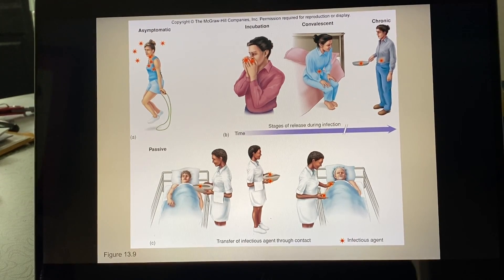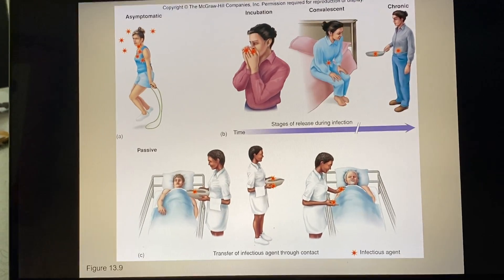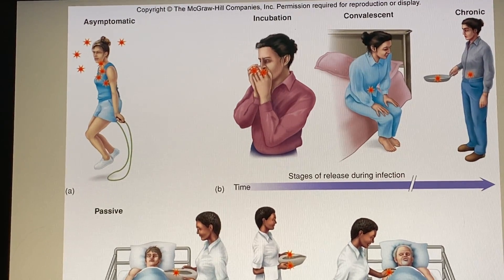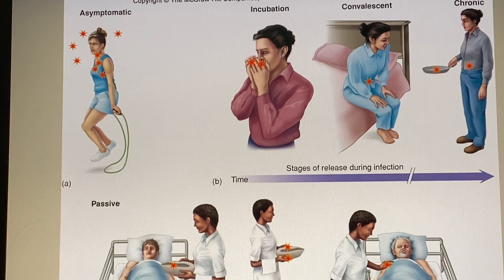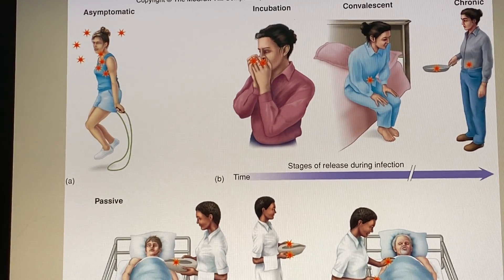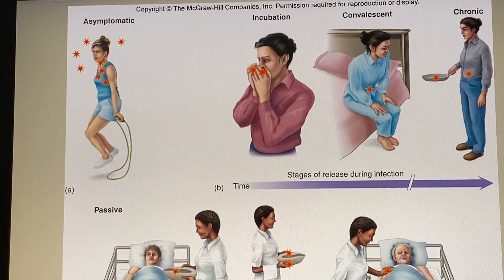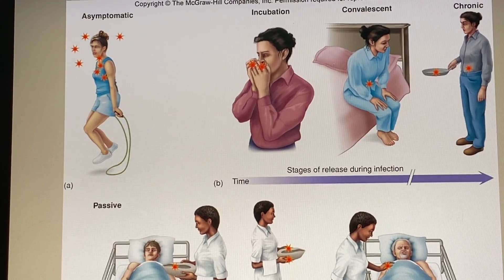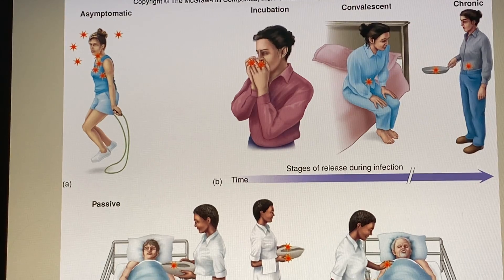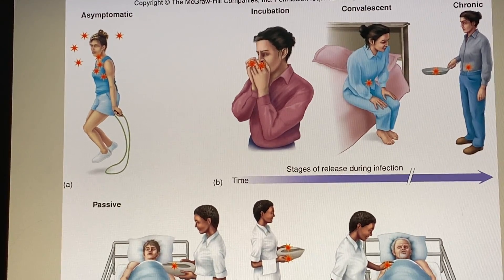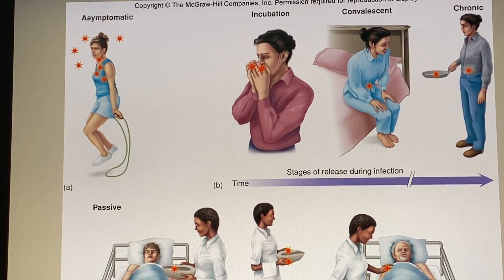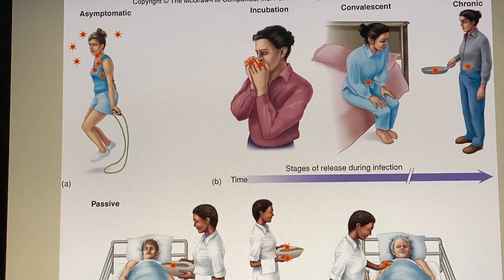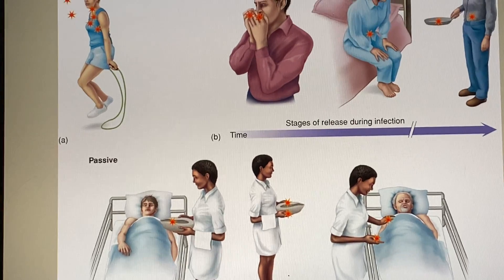An asymptomatic carrier — for example, someone who feels totally fine, goes to the gym, working out with no symptoms whatsoever — doesn't know they actually have the virus. With COVID-19, they have it in the respiratory tract but have a strong enough immune system to not develop symptoms, yet they're still harboring it and can pass it on.